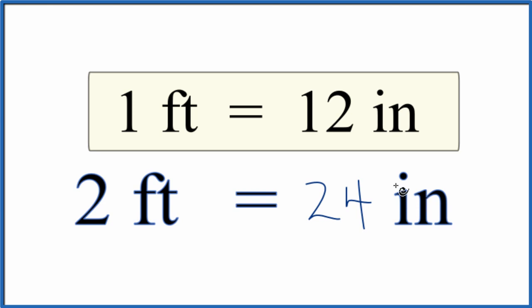You can also think about this as a ratio. You could say one foot to two feet is 12 inches to X, cross multiply and solve for X. And again, you'll get 24 inches in two feet.